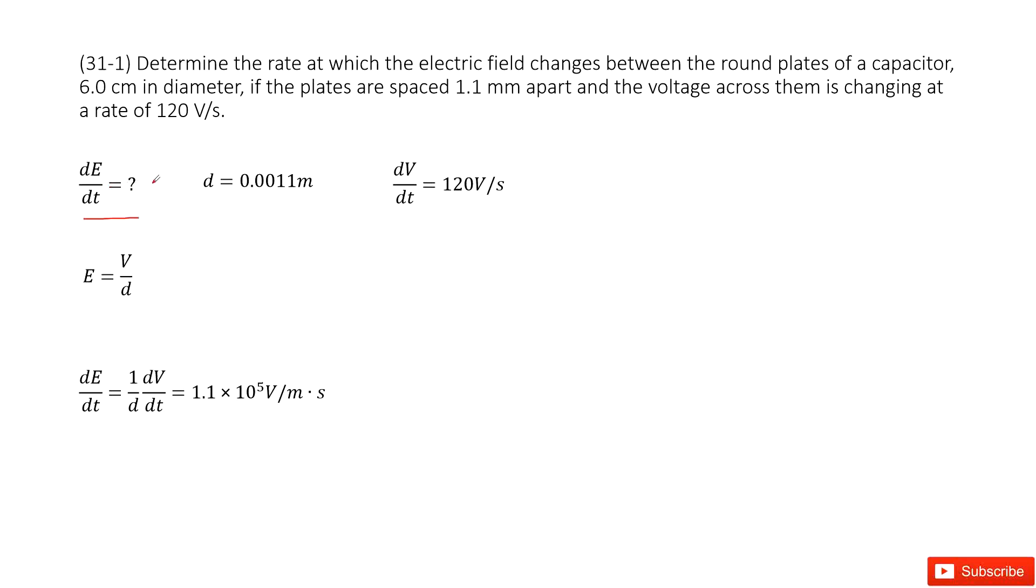And let's see what quantity is given. So the capacitor's diameter is given, so we list it there. And also the voltage change rate is given as 120 volts per second.